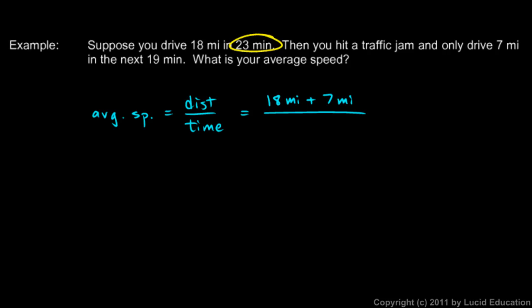The time will be the 23 minutes that we spent going relatively fast, and then the 19 minutes we spent in the traffic jam. So the time down here is 23 minutes plus 19 minutes. We need to compute each of these and then do the division here.